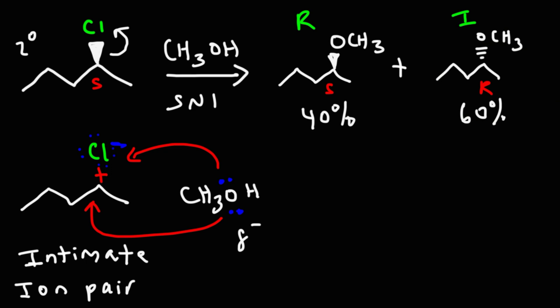So that's the basic idea behind the intimate ion pair. Now, if we were to slow down the reaction and allow more time for the chloride to be fully dissociated into the solvent, let's say if the chloride were to move away in the solution, then methanol would be free to attack from either side. And we would get closer to a 50-50 mixture as opposed to a 30-70 or 40-60 mixture. But it all depends on the proximity of the chloride to the carbocation. The closer these two are, the more likely we're going to get an unequal racemic mixture.